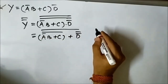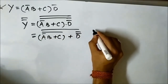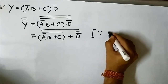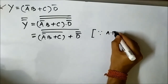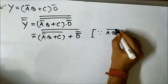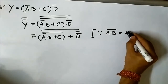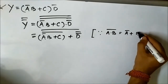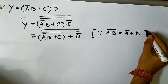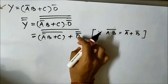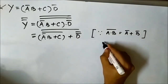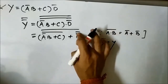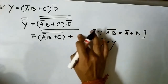Here we used this rule: A and B complement equals A complement or B complement. We know that the double complement of any signal variable is the same. So this will become D.